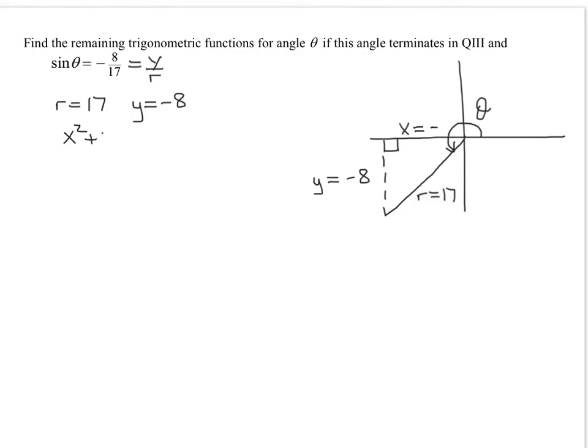So x squared plus y squared equals r squared. So we're trying to find x. So x squared plus y squared is negative 8 all squared equals 17 squared. So x squared plus 64 equals 17 squared is 289. So now I need to subtract 64 from both sides.